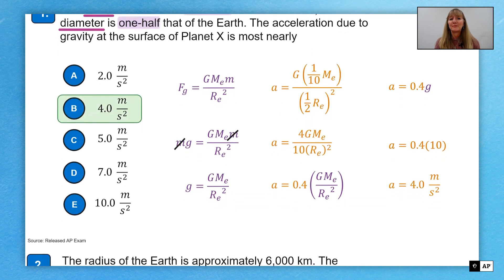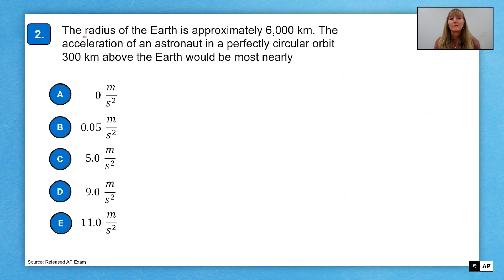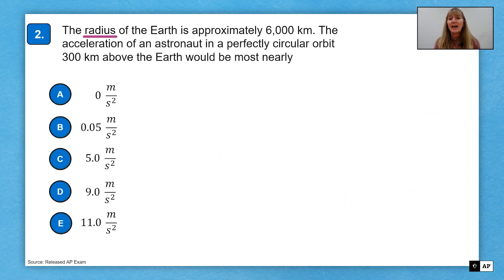Let's try the next question. The radius of Earth is approximately 6000 kilometers. I have an astronaut that is 300 kilometers above the Earth, and we would like to know what that astronaut's acceleration is in a perfectly circular orbit. I know that if they are in orbit, then there's an acceleration because the direction is changing. So it can't be zero and 300 kilometers above the surface of the Earth is not far enough away to be essentially zero. So choices A and B can be removed. Now we're down to three choices left.